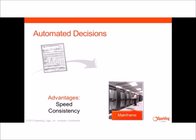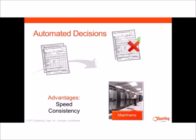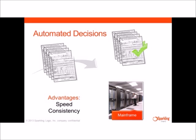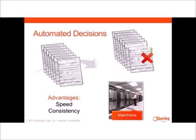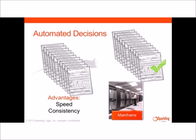Automated decisions can quickly and reliably let Anna know that she has been approved, as well as the terms and conditions of the policy. Automated decisions can process volumes of applications consistently in a short turnaround time, while underwriters focus on the complicated cases.